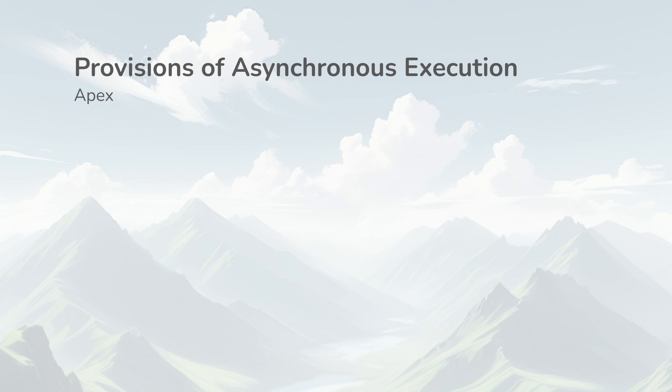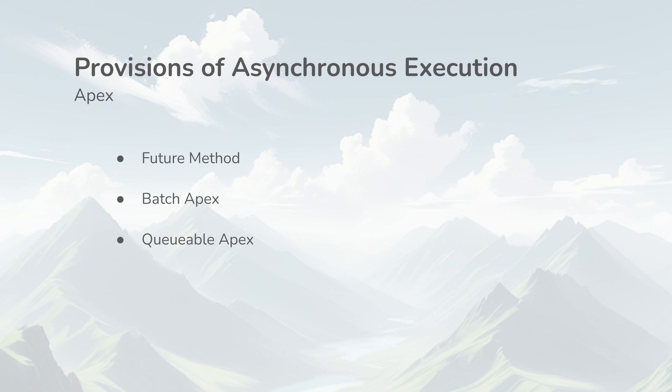Let's take a look at the different types of provisions in Salesforce for implementing asynchronous Apex. Future Methods are great for short background operations. Batch Apex is ideal for processing large volumes of data records. Queueable Apex is similar to future methods but provides more control and supports chaining of jobs, making it suitable for operations where tasks need to be performed in a particular sequence. Scheduled Apex allows us to execute Apex code at a specified time. It is also possible to use a blend of all these types for a solution, though there are certain limitations to consider.